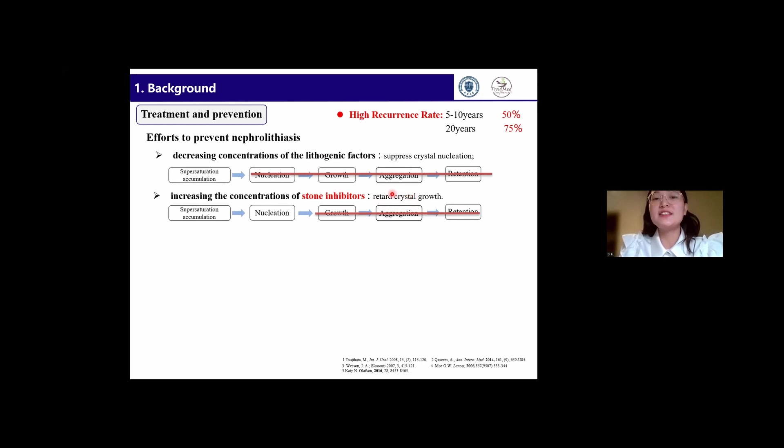But at present, there are no drugs to cure stones. Therefore, the development of inhibitor drugs to change the composition of urine and reduce the formation of stones is regarded as an important strategy to solve the stone problem.